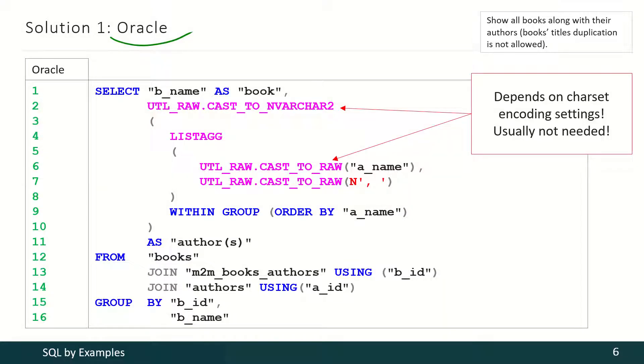In Oracle we may achieve the same result using LISTAGG function. But in some rare cases, if your DBMS is configured for some specific character encoding, you may have to convert the information first into RAW format and then convert it back to some human readable format. This is not required for most cases, but for some cases this may be required. Here you may just experiment on your own DBMS setup.